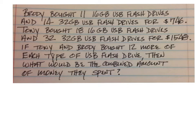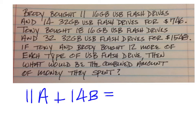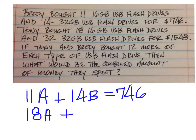If Brody bought 11 16GB, we're going to make that A. 11A plus 14B for the 32GB for a total of $746. And then you have Tony that bought 18 of the 16GB and 32 of the 32GB for a total of $1548.